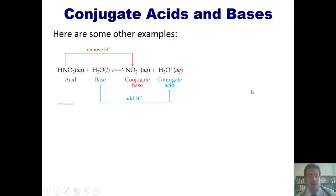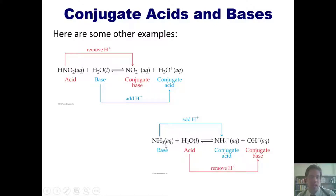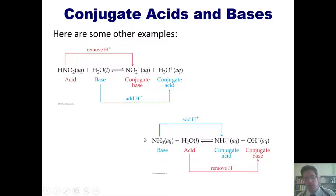Water doesn't always behave as a base — it depends on the situation. Looking at this example, we can see something different. As we go from left to right, the water is actually giving a hydrogen to NH3 to become hydroxide OH-. Because the water is giving up a hydrogen, it becomes the acid. The thing accepting the hydrogen is NH3, which accepts the hydrogen to become NH4+ ammonium. NH3, ammonia, is the base; ammonium is its conjugate acid.